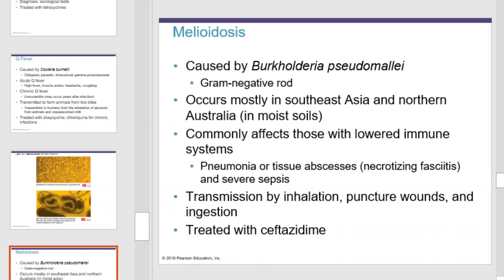Melioidosis is caused by Burkholderia, which is a gram-negative rod. It occurs mostly in Southeast Asia and Northern Australia in moist soils. It commonly affects those with compromised immune systems. Pneumonia, tissue abscesses, necrotizing fasciitis, and severe sepsis are common. Transmission occurs by inhalation, puncture wounds, and ingestion.